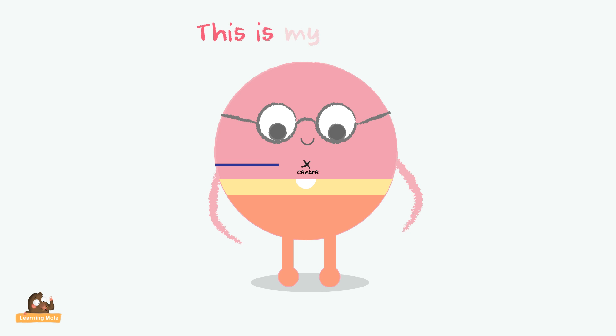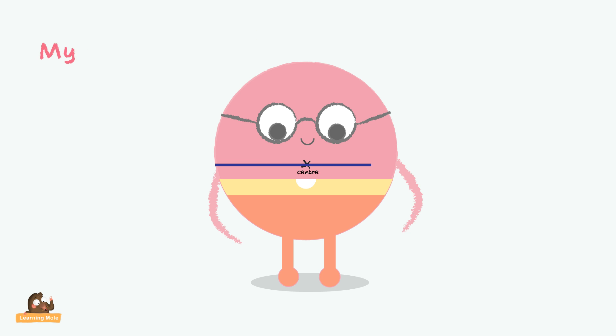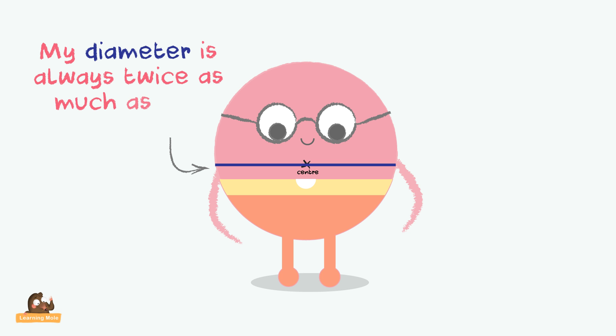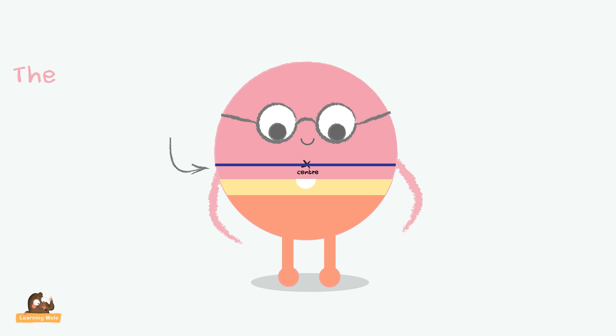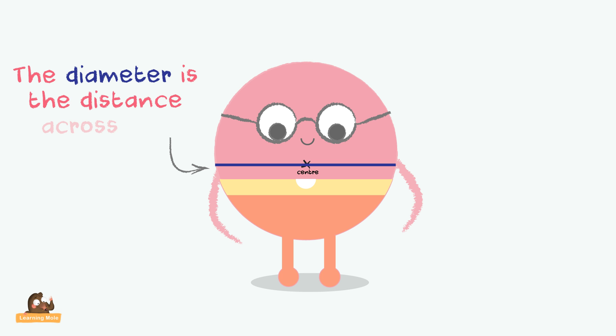This is my diameter. The diameter is the distance across the circle, and it is always twice as much as the radius.